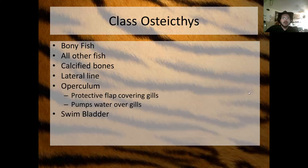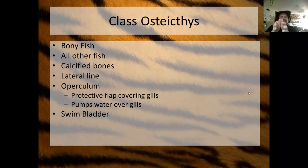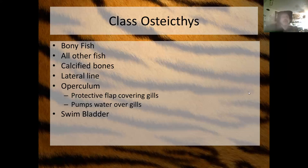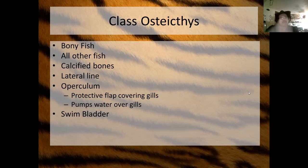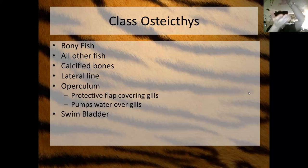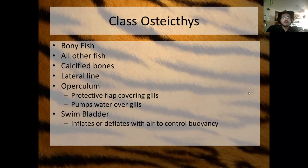If they fill the swim bladder up with air, the fish will start to float. If they collapse it and drain the gas into their blood and then out of their gills, they will start to sink. Osteichthyes can vary where they are in the water by inflating or deflating their swim bladder. When an Osteichthyes fish dies, its swim bladder swells up with gas. Since the swim bladder is generally ventrally located, they'll float belly up.